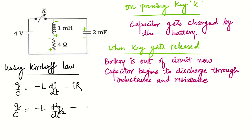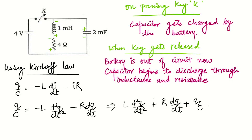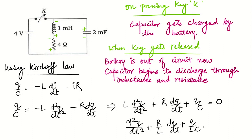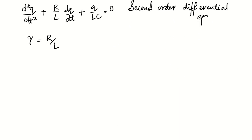We can write I in the form of charge. This becomes a second order differential equation of charge, with dq/dt and R. Rearranging, we get: L d²q/dt² plus R dq/dt plus q/C equals zero. Dividing the whole equation by L, this gives d²q/dt² plus (R/L) dq/dt plus q/(LC) equals zero. This is our second order differential equation.